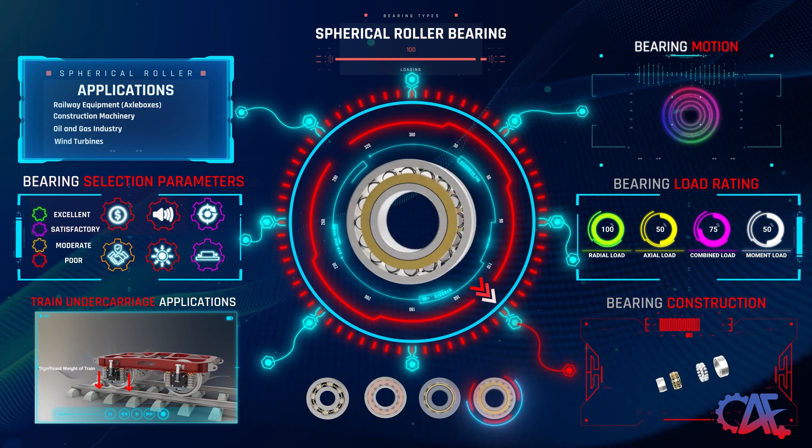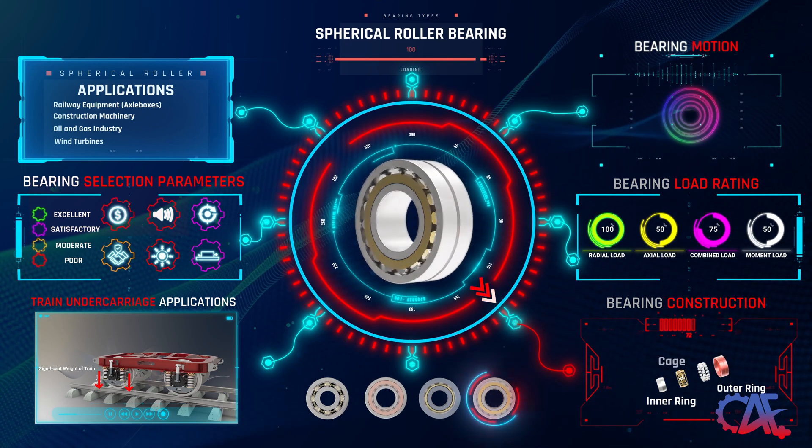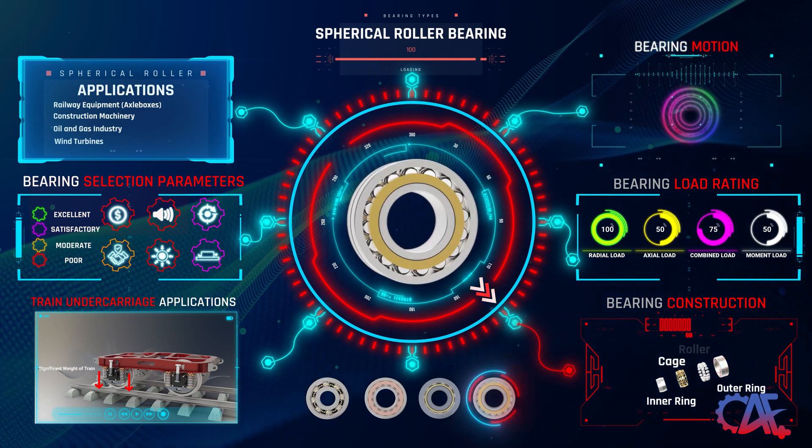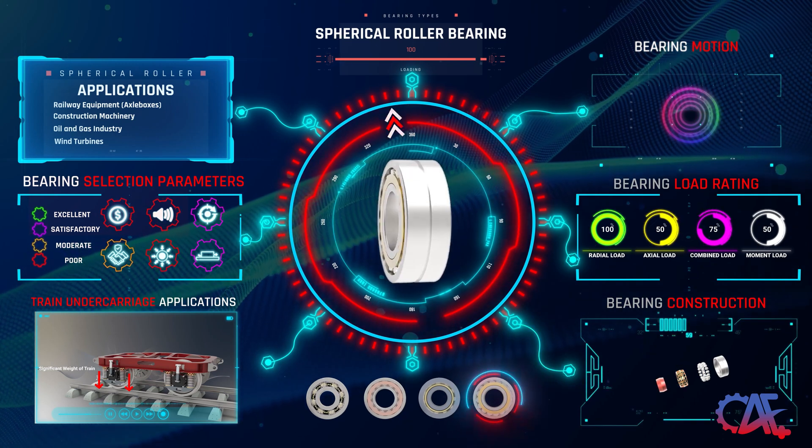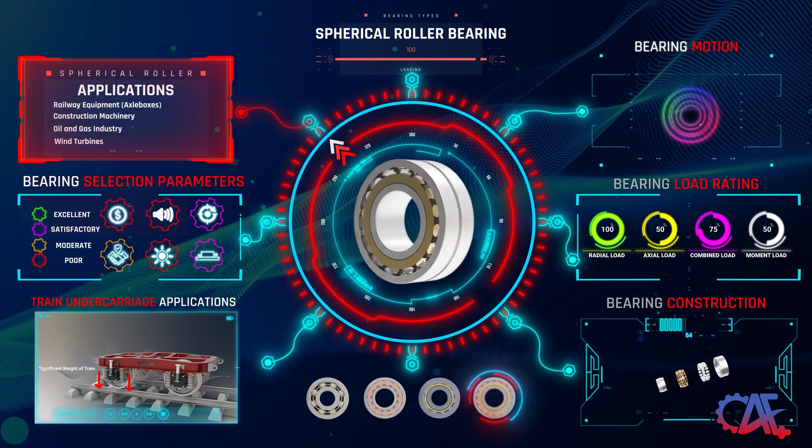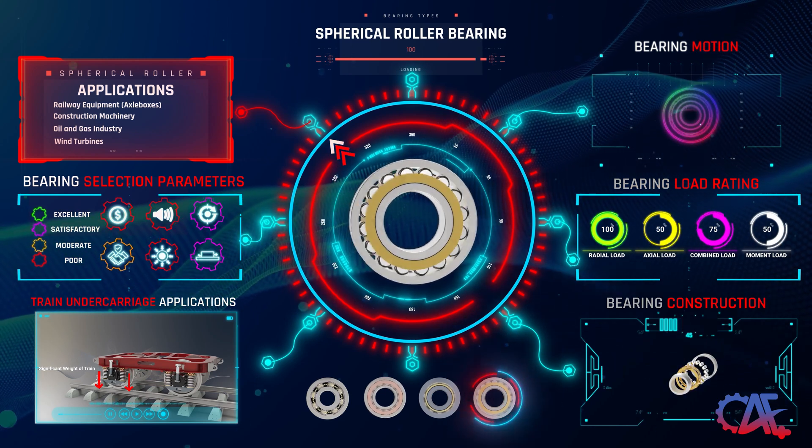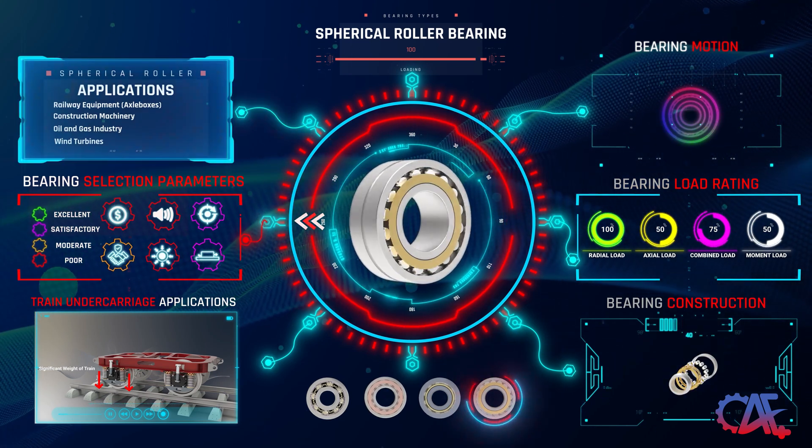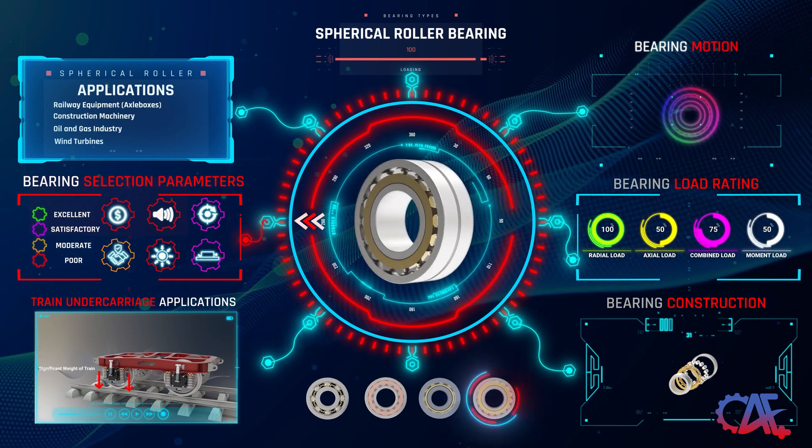These bearings consist of several separable components, including an outer ring, an inner ring, a cage, and a double row of barrel-shaped hardened steel rollers. They're used in a wide range of applications, including railway equipment, construction machinery, the oil and gas industry, and wind turbines.